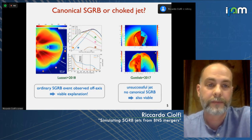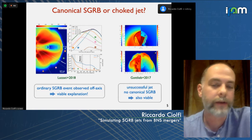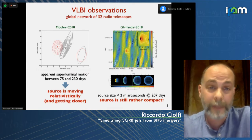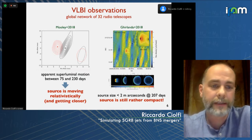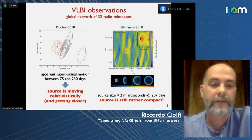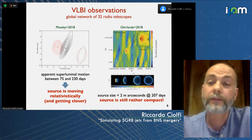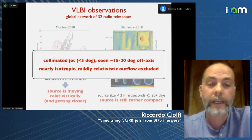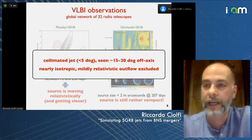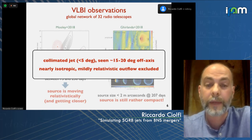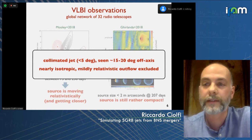Up to about 200 days after the merger, this cocoon explanation worked as well as the alternative scenario where there would be no collimated outflow — just a wide-angle choked jet or jet-less mildly relativistic outflow, perhaps with radial stratification. Both models could work, and many papers based on numerical simulations supported one or the other. The solution came much later, thanks to very large baseline interferometry in the radio band, which measured the projected motion of the radio source between 75 and 130 days and constrained the source size.